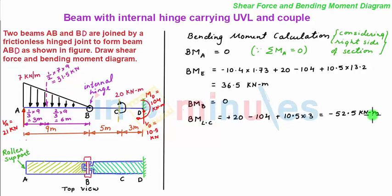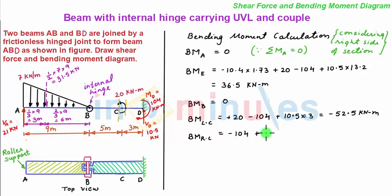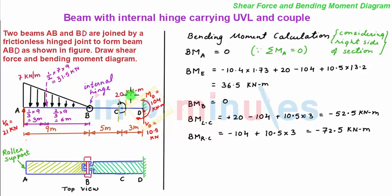Next, by taking a section towards the right of C and very near to it, the bending moment towards the right of C is given as minus 104 kN·m (Md), then plus 10.5 into 3, which equals minus 72.5 kN·m. So we see that we only have to subtract this anticlockwise moment of 20 kN·m from the bending moment towards the left of C to get the bending moment towards the right of C.